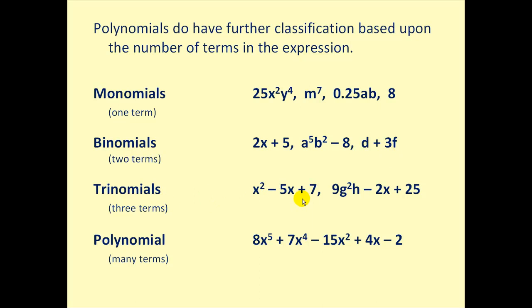If the polynomial has three terms, it's called a trinomial. Here are two examples of trinomials. And once a polynomial gets past three terms, we usually just call it a polynomial. The word poly means many.